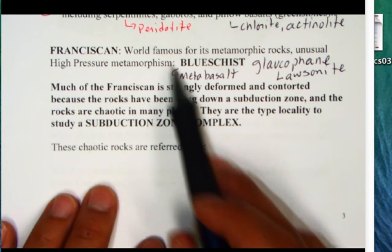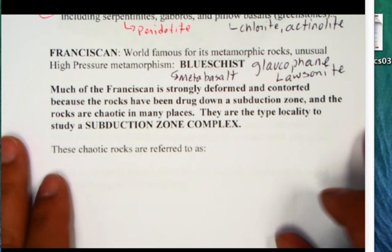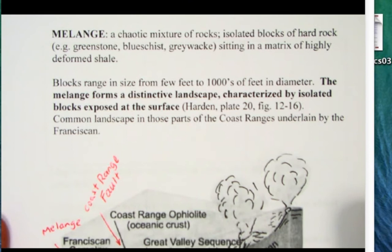Remember these chaotic rocks are referred to in a subduction zone with that French word, well that's melange. So they're referred to as melange, chaotic mixture of rocks.